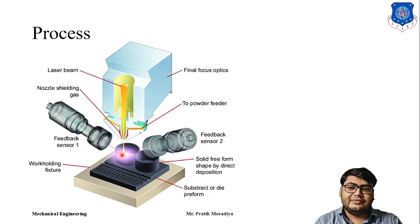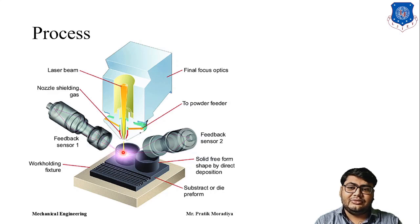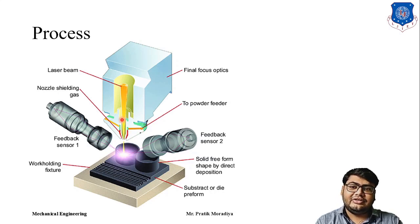The key difference is that DMD uses feedback sensors — specifically CCD cameras. These cameras give feedback to the computer, and according to that feedback, the area of the nozzle, the amount of powder being fed, the speed of the machine, and the intensity and focusing point of the laser are all controlled. CCD is a type of sensor normally used in cameras, providing optical feedback by capturing images and adjusting process parameters accordingly.